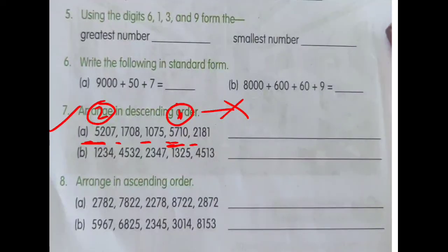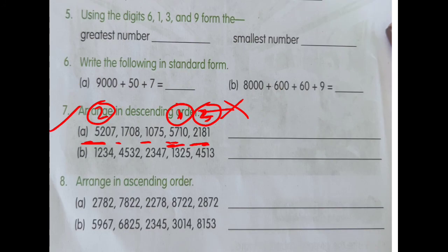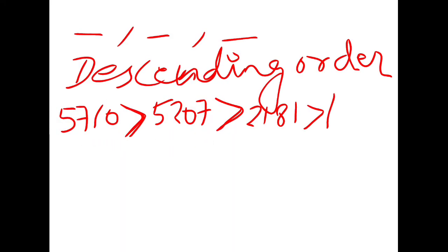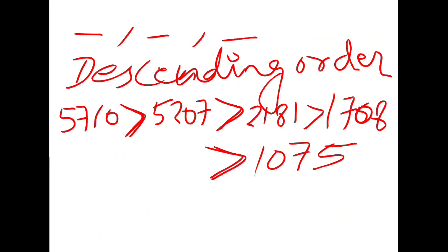Now for the remaining numbers, the leftmost digits are 1, 1, and 2. Obviously 2 is the biggest, so 2,181 comes next with a greater-than symbol. The two numbers starting with 1 remain. Their next digits are 7 and 0 — the one with 7 is bigger, so 1,708 comes before 1,075. The final descending order is: 5,710 > 5,207 > 2,181 > 1,708 > 1,075.